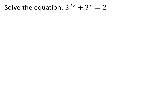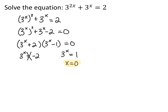Using a similar idea, solve 3 to the 2x plus 3 to the x equals 2. I rewrite 3 to the 2x as (3 to the x) squared, since multiplying exponents is the same as raising a power to a power. So (3 to the x) squared plus 3 to the x equals 2. This looks like a quadratic. Moving the 2 over and factoring gives (3 to the x plus 2)(3 to the x minus 1) equals 0, meaning 3 to the x equals negative 2 or 3 to the x equals 1. Since 3 to the x can never equal negative 2, there's no solution there, and 3 to the x equals 1 gives x equals 0.